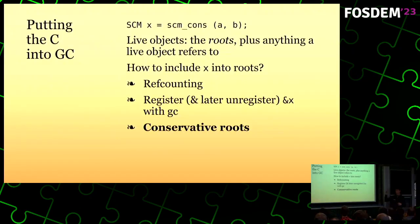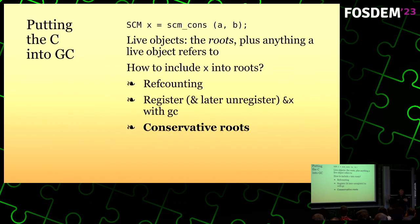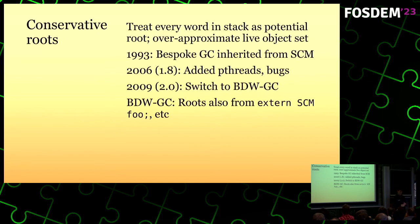There are actually three strategies we can use here. One, we can ref count values — we used to laugh at this, but it's coming back in style. Another, you could register the location of this value with the runtime and unregister it when it goes out of scope. And another way would be what is called conservative root scanning, and that's what Guile has done for many, many years.